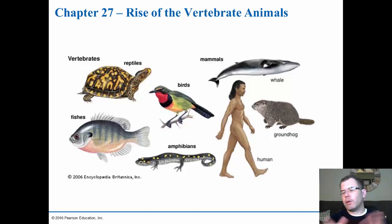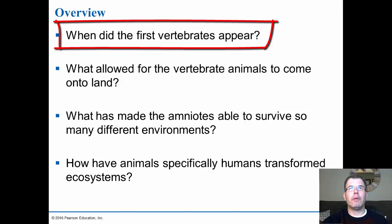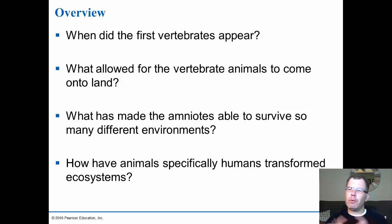Let's take a look at the rise of the vertebrate animals and talk about where they started and where we are now with evolution. The first thing is when did the vertebrates first appear — that happened right around 500 million years ago, right when you had bilateral symmetry forming. You saw the Cambrian explosion, which gave rise to the vertebrate animals. We're part of the deuterostome phyla.